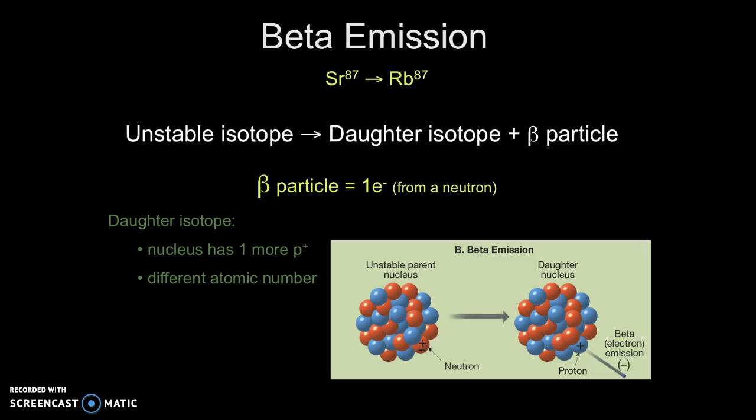One example of beta emission is the decay between strontium-87 and rubidium-87. What we're looking at in this diagram is the unstable parent. It's taking one of its neutrons and it's going to say, hey, little electron beta particle, get out of here. It spits it out, and now that neutron has become a proton. So we can see that there's just been a change in the element that we have.